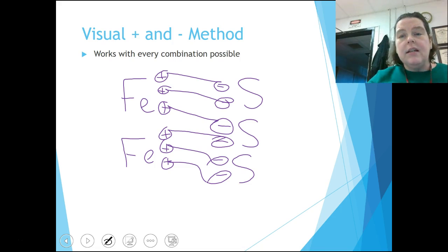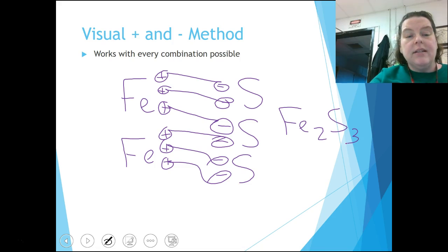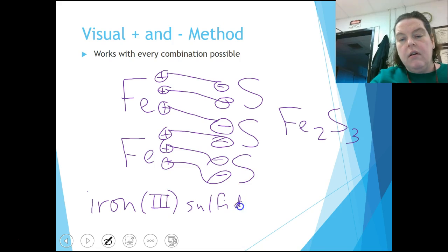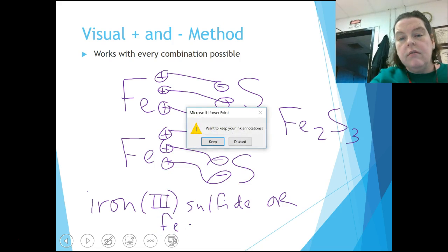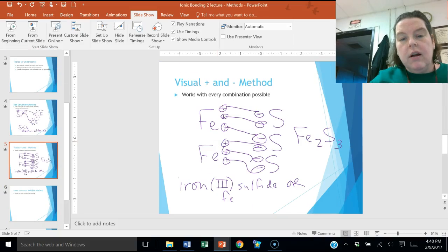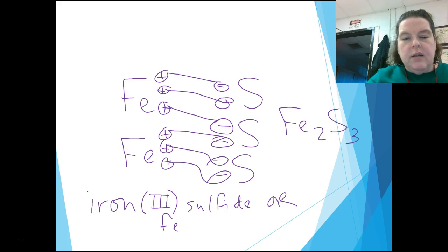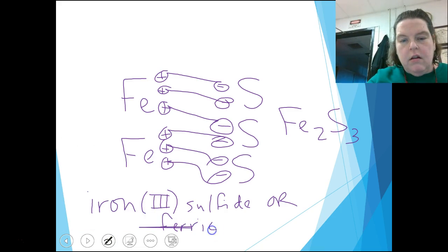So what do we see on the screen? We see Fe2. We see two of them. And we see S3. Now, because the Fe had a three plus charge, and there are different forms of Fe, I have to name it as such. So I have to name this iron 3 sulfide. Or I could also name it ferric sulfide.